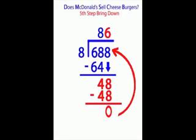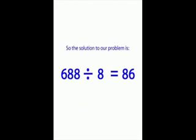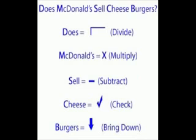Are there any other numbers left to bring down? No. Our problem is complete. 688 divided by 8 equals 86. It's easy to remember the steps in long division whenever we think of our acronym, Does McDonald's Sell Cheese Burgers.